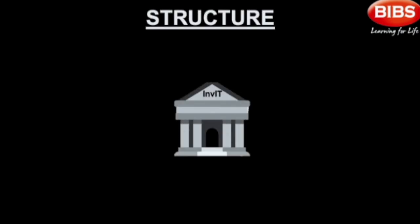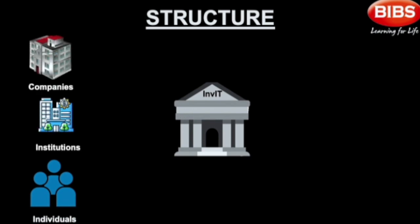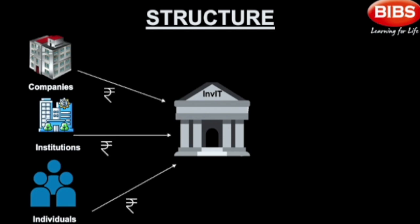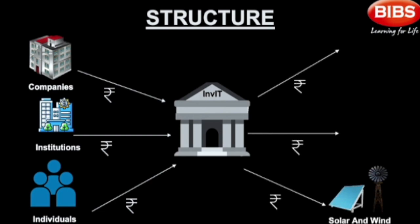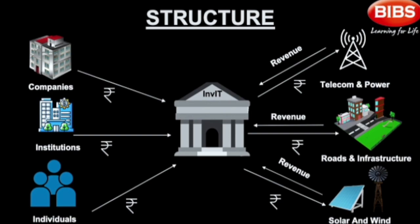There are three types of investors who can participate in an InvIT: individuals, institutions, and companies. The InvIT creates a pool of funds from all these investors and then subsequently invests in various big-ticket infrastructure projects such as solar and wind power, road and transport, and power and telecom sectors. Whatever revenue these projects generate, they pass it on to the InvIT, and the InvIT fund then pays back its investors as dividend.